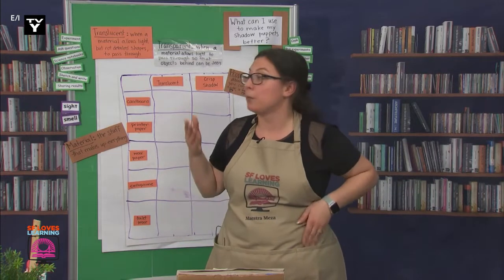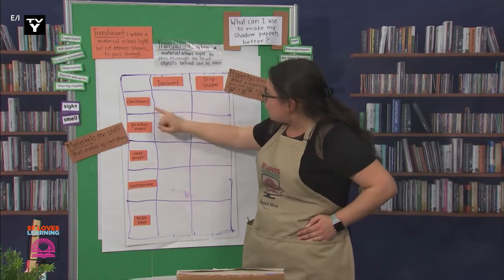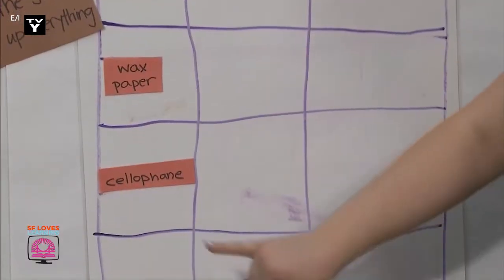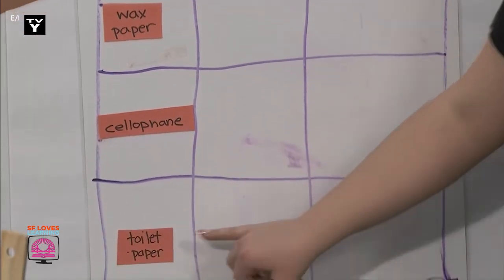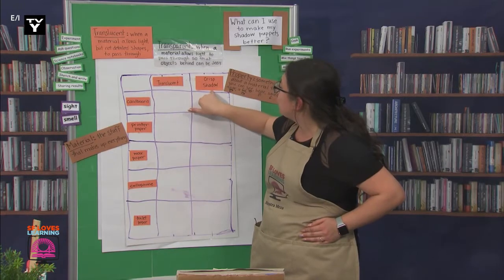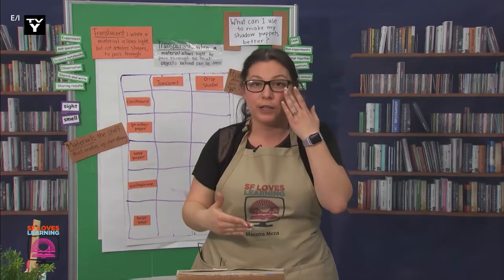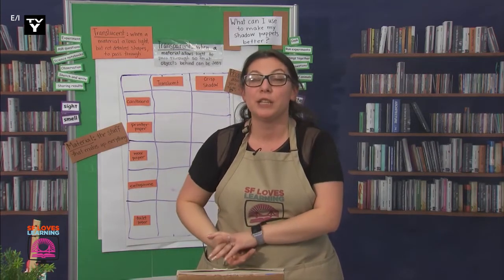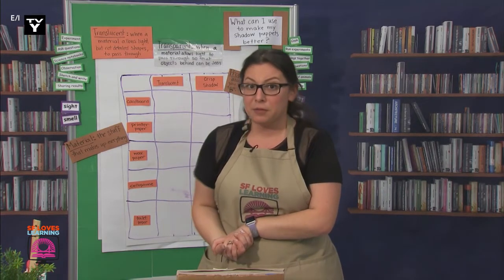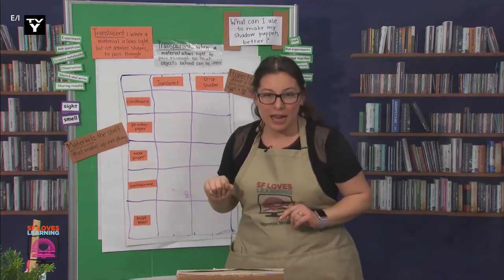Let's read what materials and properties we're going to check out today on my chart. Today we'll be testing cardboard, printer paper, wax paper, cellophane, and toilet paper. We'll be looking for translucent properties and a crisp shadow. I'm going to use tape to change the materials out for each test and observe each material to see if it has both of the properties I chose. Are you ready to test out cardboard with me?